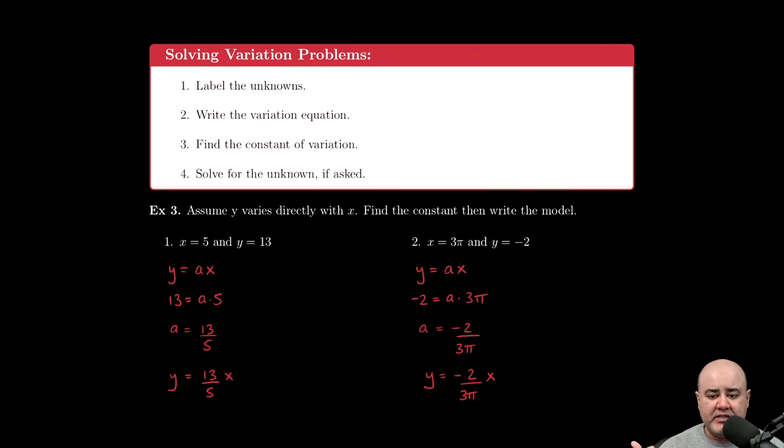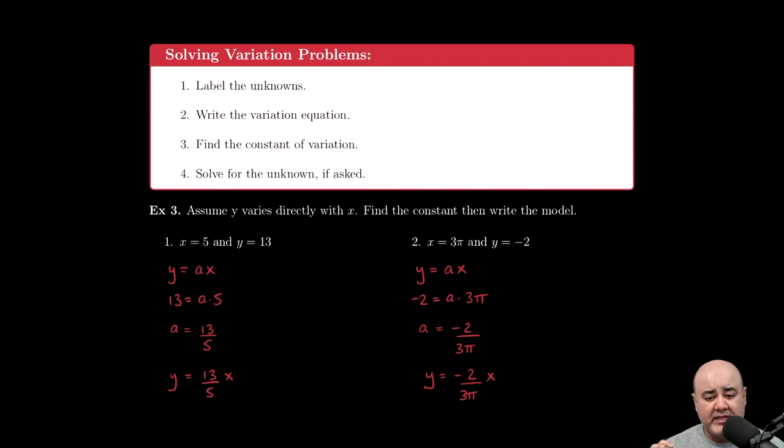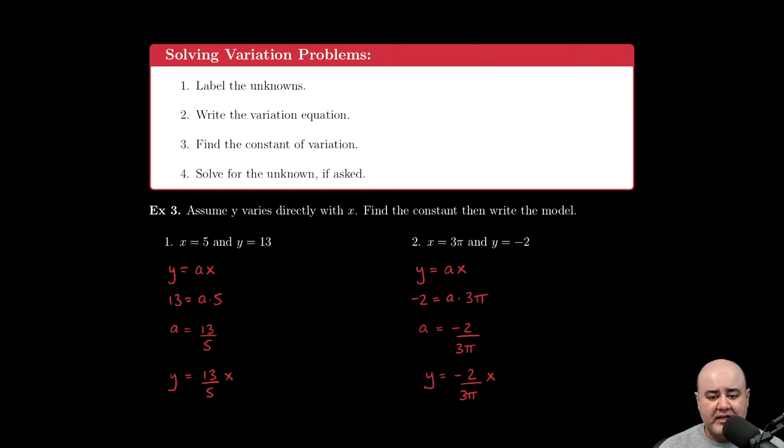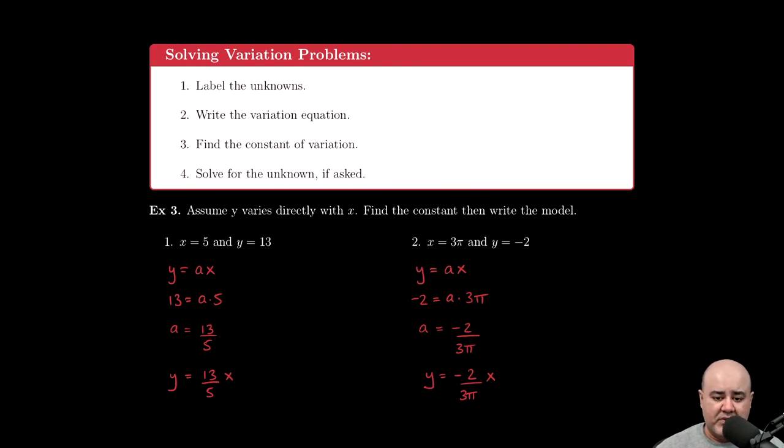Then you want to write down the variation equation based on whether it's direct, joint, or inverse. Nine times out of ten, you'll be given some information with which you can find the constant of variation. At that stage, you can write your model down once you've come up with a constant. In some cases, however, you're going to be asked to find the model and then use the model to predict what some other future value is going to be.